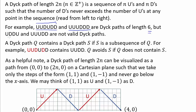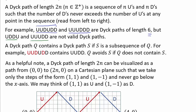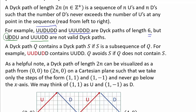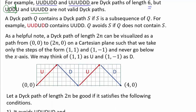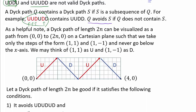But UUDDU and UUUDD are not valid Dyck paths. In UUDDU, after the first U you have 2 D's, so right before the final U you have more D's than U's, which is not valid. Also, UUUDD does not have the same number of U's and D's, so it's not a valid Dyck path. A Dyck path Q contains a Dyck path S if S is a subsequence of Q — for example, UUDUDD contains UUDD. This pattern does not have to be consecutive; as long as you have the pattern from left to right contained inside, we say Q contains S. And Q avoids S if Q does not contain S.